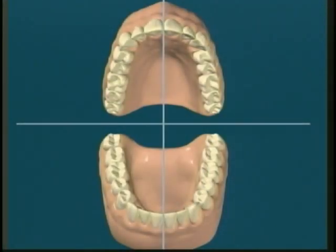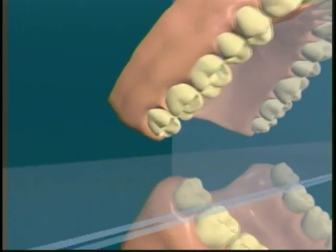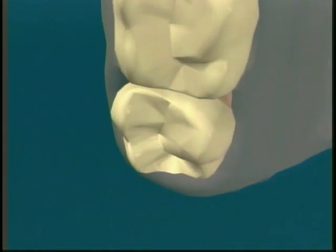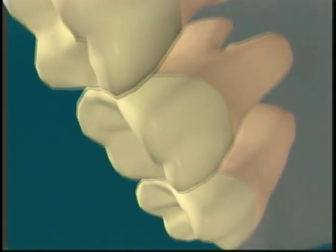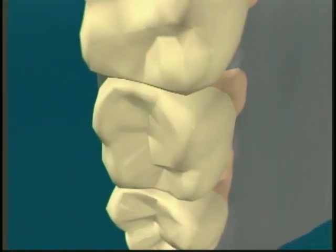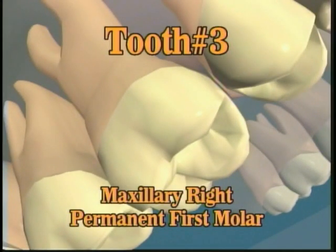Let's look at each tooth in the permanent dentition using the universal system of identification. Starting in the maxillary right posterior area, we begin with tooth number one, the maxillary right permanent third molar. Tooth number two, the maxillary right permanent second molar. Tooth number three, the maxillary right permanent first molar.